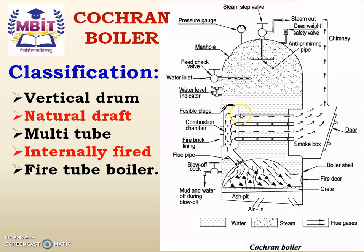It is a multi-tube boiler because it has multiple tubes. It is internally fired because the burning of fuel takes place inside the boiler drum, and it is a fire tube boiler because the hot gases pass through the tubes and water surrounds the tubes. So this was the classification of the Cochran boiler.